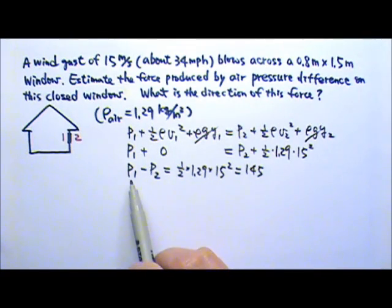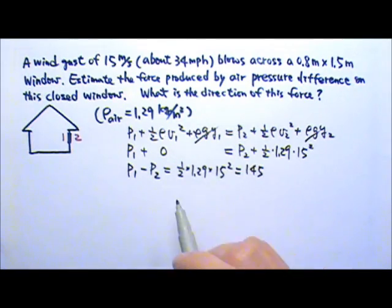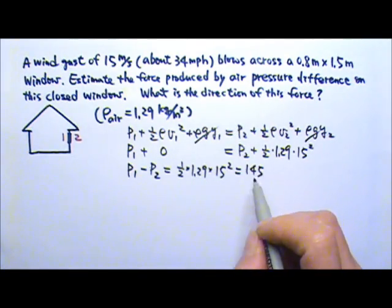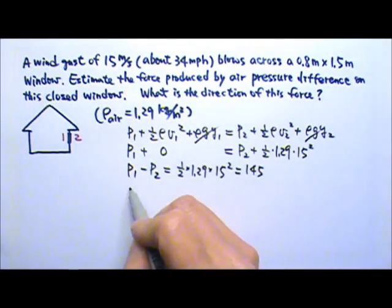If you had used P2 minus P1, you'll get negative 145. That's okay. We can just drop the sign and use the absolute value to find the amount of pressure difference.